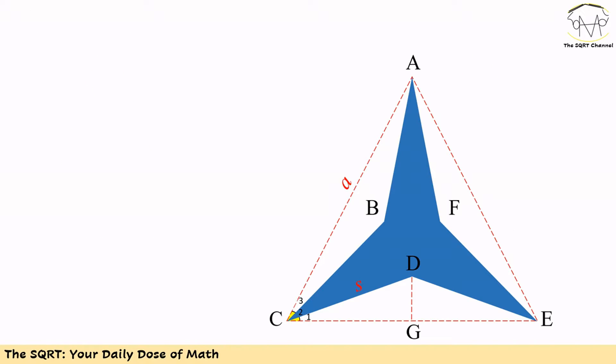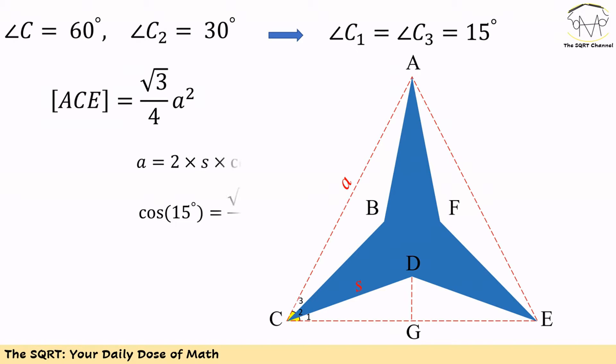Since in triangle ACE all sides are equal, internal angle ACE is equal to 60 degrees. We also know C2 is equal to 30 degrees, so angle C1 and angle C3 are equal to 15.